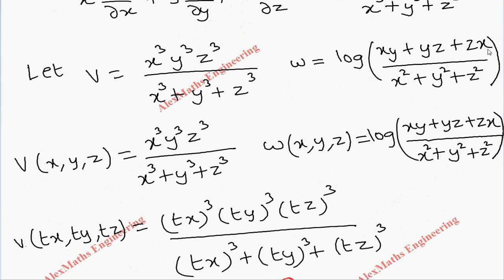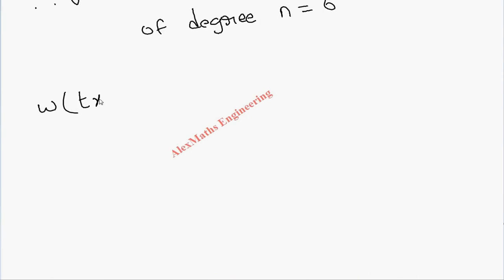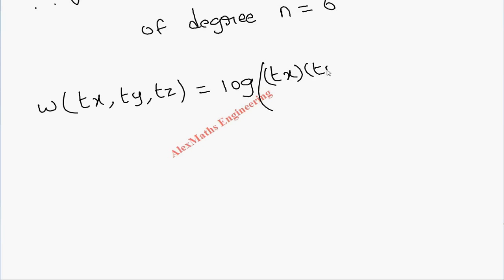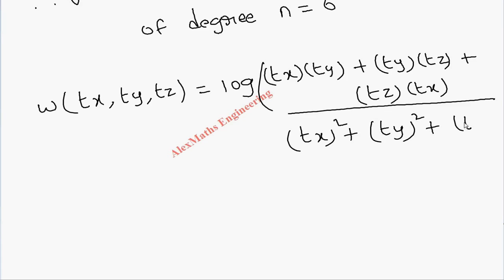In the same way, we continue for function w. So w(tx, ty, tz) is log of: (tx·ty + ty·tz + tz·tx) divided by (tx)² + (ty)² + (tz)².